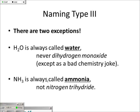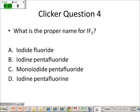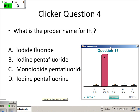Water is called water — sometimes aqua if it's part of a bigger complex. And NH3 is called ammonia. What's the proper name for IF5? It's iodine pentafluoride, because I is listed first so it's not the anion. The F gets the '-ide' suffix because it's the second element — it's the anion, the one to the right.